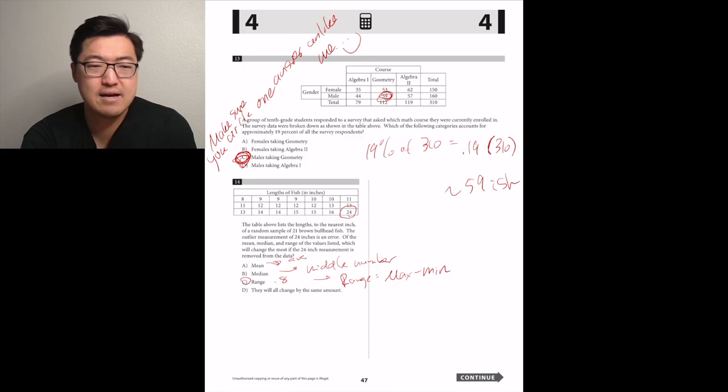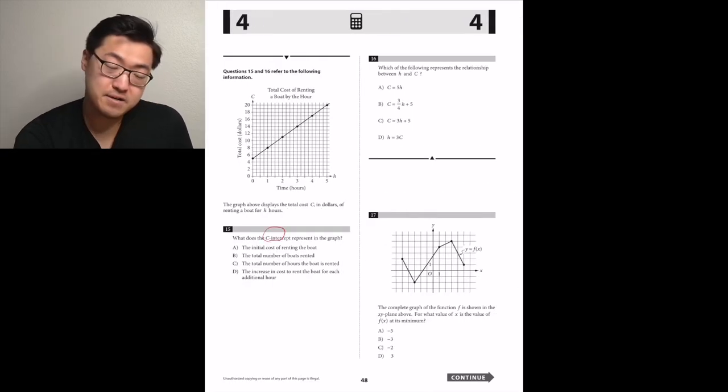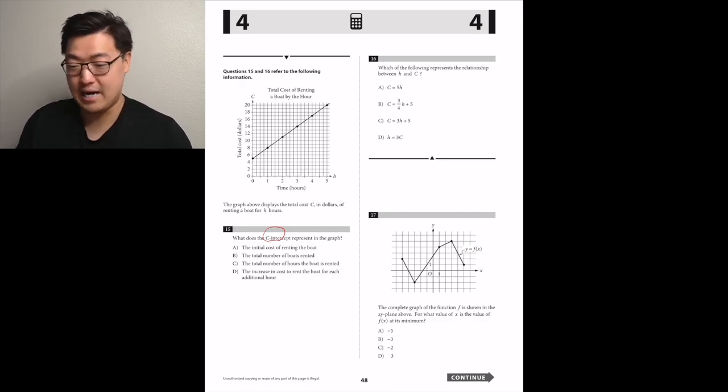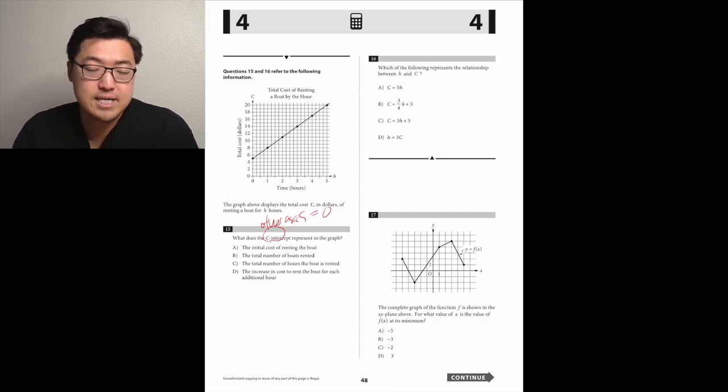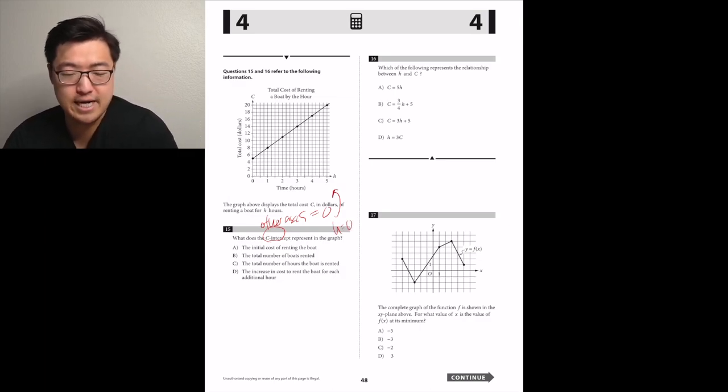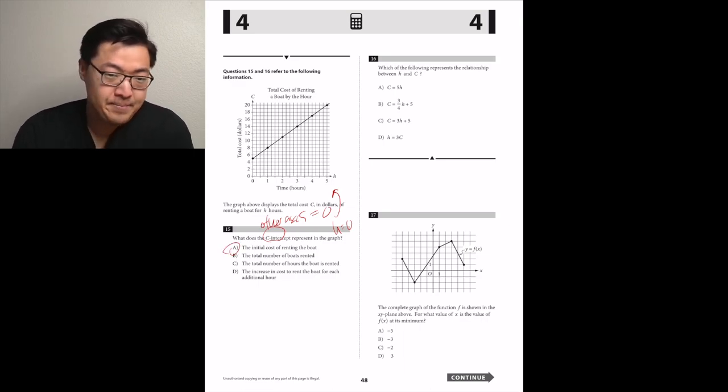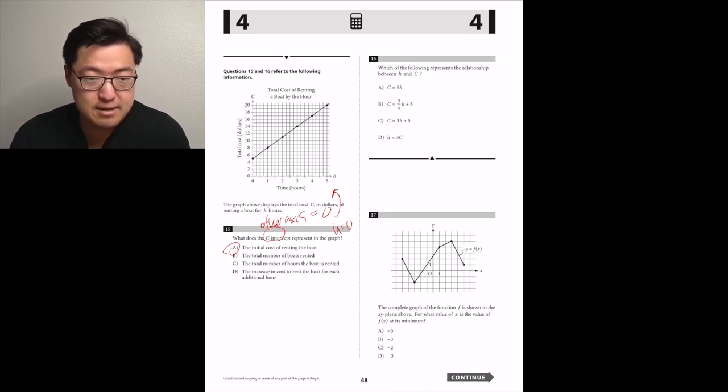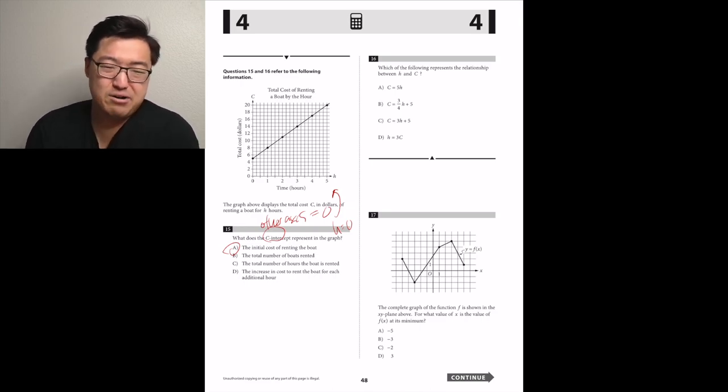What does the C-intercept represent on the graph? C-intercept means H is 0 because Y-intercept means X is 0, X-intercept means Y is 0. So like something intercept means the other axis is 0. If they're asking for what C-intercept is, that represents when H or the time in this case is 0. So we want something that represents no time has passed. So initial cost is probably that because the initial time is like when no time has passed yet. Number of total boats is not no time has passed. Total number of hours the boat is rented, I don't think it was rented for no time. And then the increase in cost to rent it for each additional hour, it's not each additional hour if it's no time. So A.